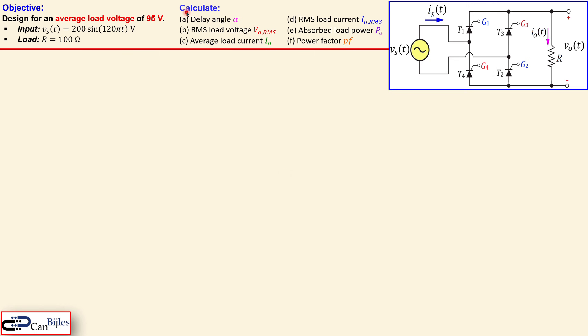We will calculate what we need as a delay angle alpha, which will also be provided to the gate. Then we will calculate the RMS load voltage, the average load current, RMS load current, absorbed power, and finally the power factor for this circuit.